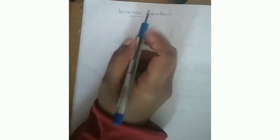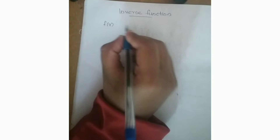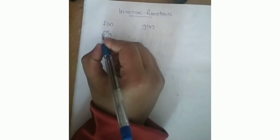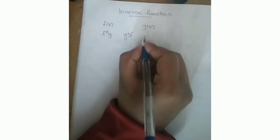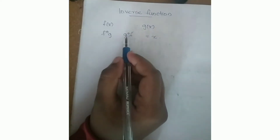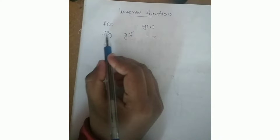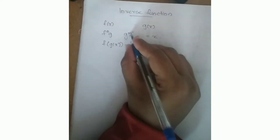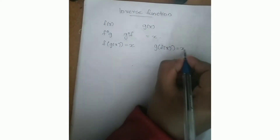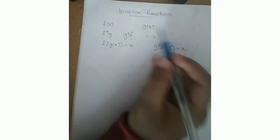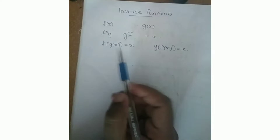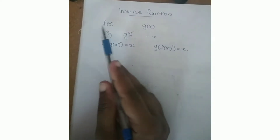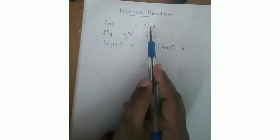We are going to talk about how the inverse function works. F of x and g of x are inverse functions of each other. We will talk about f composite g and g composite f, and we will talk about the inverse function of f and g of x.